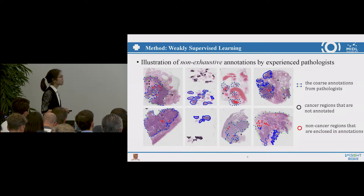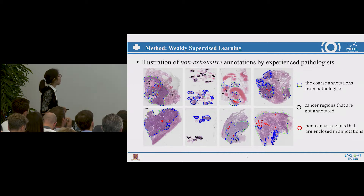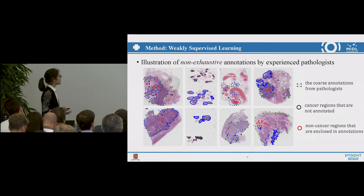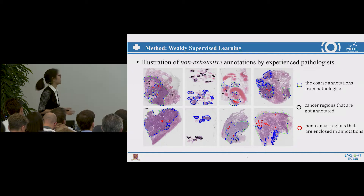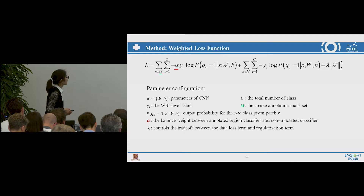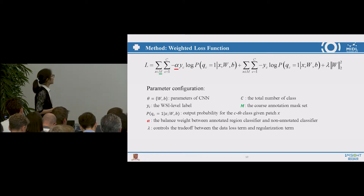Here I show some examples of the annotated images. As shown in the figure, these annotations are quite coarse, so it's not safe to take all the annotated regions as positive patches and the others as negative patches. In our work, we assign image-level labels to all patches from the same image. But we believe it's reasonable to put more emphasis on the annotated regions since they carry more confidence to manifest the cancer type. So we designed a weighted cross-entropy loss function, where M denotes the cross-annotation mask set and alpha is used to place more weight on the annotated regions.